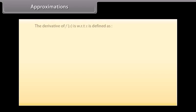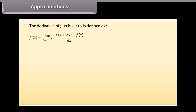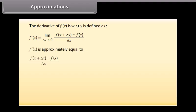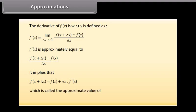Approximations. The derivative of f(x) with respect to x is defined as f dash of x equals the limit as delta x approaches 0 of [f(x plus delta x) minus f(x)] divided by delta x. This means f dash of x is approximately equal to [f(x plus delta x) minus f(x)] divided by delta x, which implies that f(x plus delta x) is approximately equal to f(x) plus delta x into f dash of x. This is called the approximate value of f(x plus delta x).